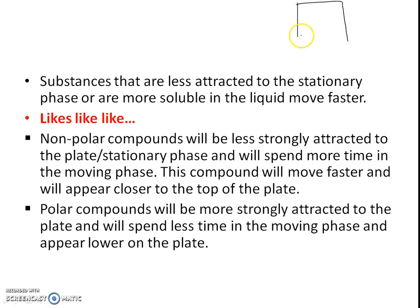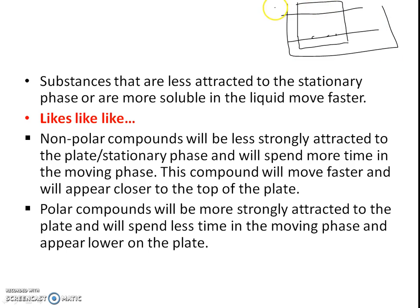As we see in the different steps, the sample is to be spotted. Then the stationary phase is dipped in the mobile phase and allowed to run. Substances during the development of the chromatogram will move depending upon their affinity for the stationary phase and mobile phase. Substances that are least attracted towards the stationary phase — meaning they have more affinity for the mobile phase — will move faster.